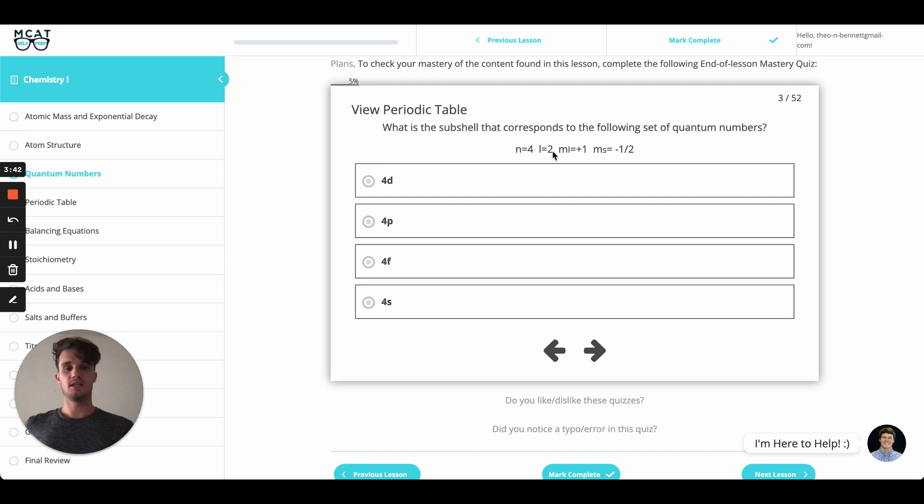Okay, we have our N number, which tells us the amount of energy that's contained. And in this case, all these answers line up. They're all four. And then we have the L number.